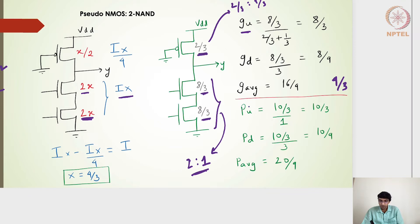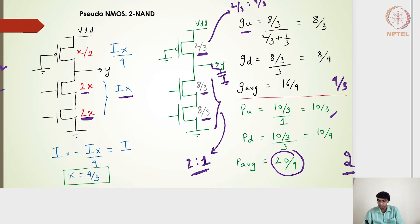The normalized parasitic for going up is the capacitance at the output node — (8/3 + 2/3) = 10/3 — divided by the benchmark inverter's output capacitance of 1, giving 10/3. For the going-down parasitic it is again 10/3 divided by 3, giving 10/9. The average parasitic is 20/9, which is greater than the value of 2 for the regular CMOS two-input NAND gate. Both the average logical effort and the average parasitics are worse than those of regular CMOS (4/3 and 2).